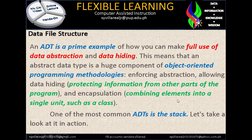An ADT is a prime example of how you can make full use of data abstraction and data hiding. This means that an abstract data type is a huge component of object-oriented programming methodologies — enforcing abstraction, allowing data hiding, protecting information from other parts of the program, and encapsulation: combining elements into a single unit such as a class.